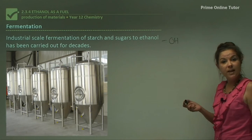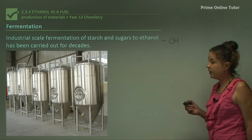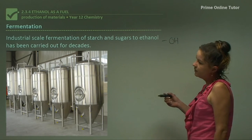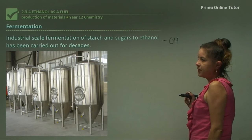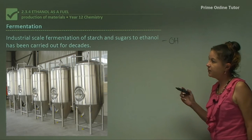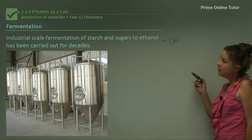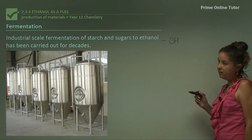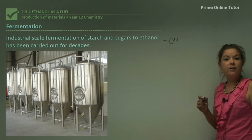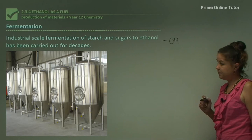So let's look at fermentation as another way of obtaining ethanol. Industrial scale fermentation of starch and sugars to ethanol has been carried out for decades.